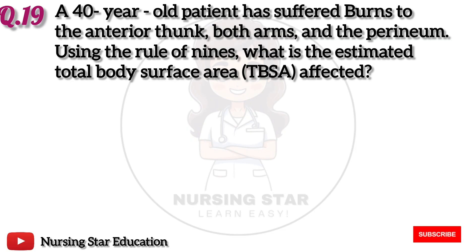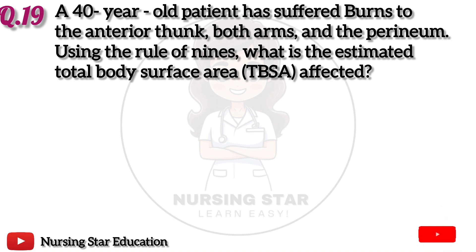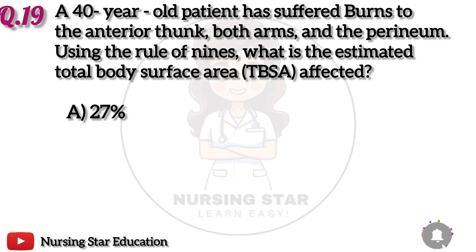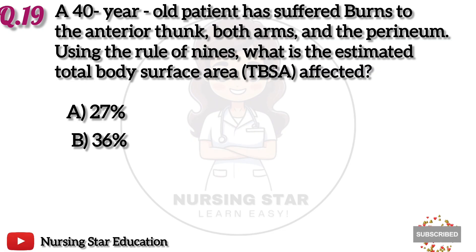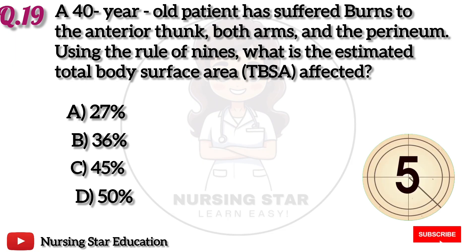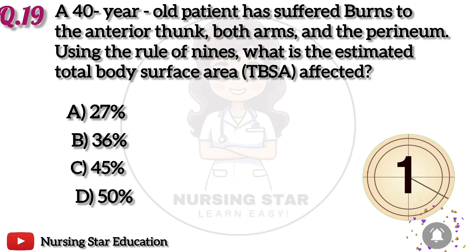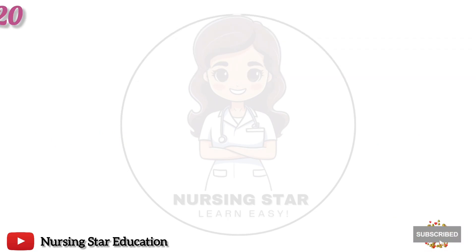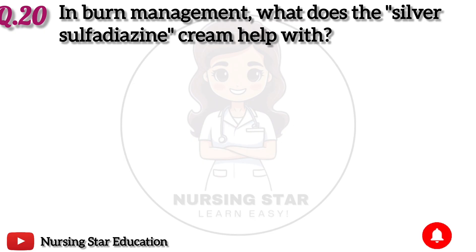Question 19: A 40-year-old patient has suffered burns to the anterior trunk, both arms and the perineum. Using the rule of nines, what is the estimated total body surface area (TBSA) affected? Option A: 27%. B: 36%. C: 45%. D: 50%. The correct answer is B: 36%.